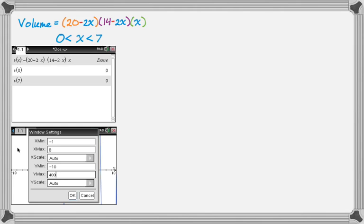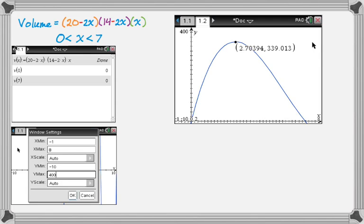And then finally I graphed. So here's a graph of v of x. And you can see that there's that maximum point, 2.70394, 339.013. So remember, this function takes x, which is the amount you're going to cut, the size of the cut you're making. So it takes that, it plugs it in, and it tells you the volume. So the maximum volume I'm ever going to get is 339.013.